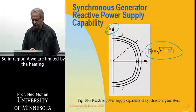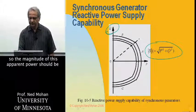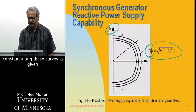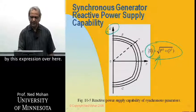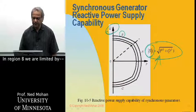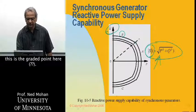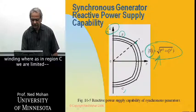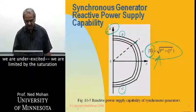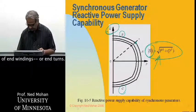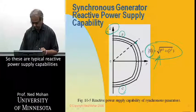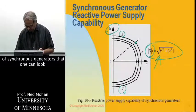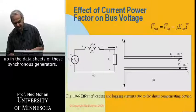In region A, we are limited by the heating of the windings, so the magnitude of the apparent power should be constant along these curves as given by this expression. In region B, this is sort of the rated point, and we are limited by the overheating of the field winding. In region C, where we are very under-excited, we are limited by the saturation of end windings or end turns. These are typical reactive power supply capabilities of synchronous generators that one can look up in their data sheets.